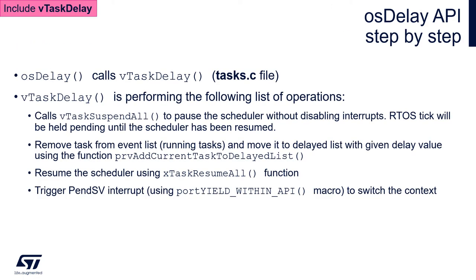Let's focus on OSDelay. OSDelay calls vTaskDelay from the FreeRTOS API. It is defined within the tasks.c file, and to use this function we need to enable include_vTaskDelay within the FreeRTOS configuration. The vTaskDelay function performs the following list of operations.